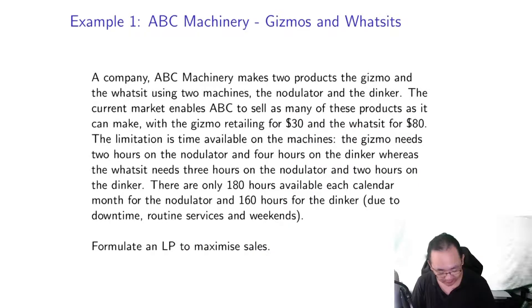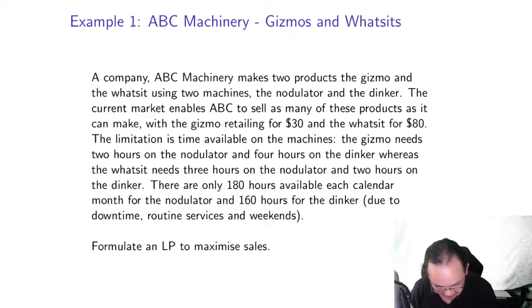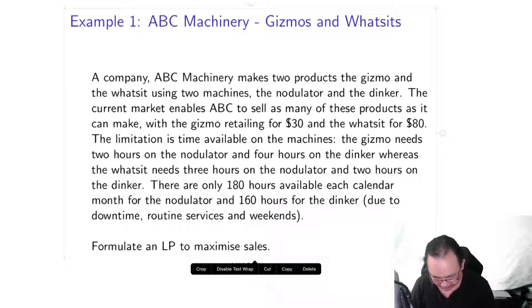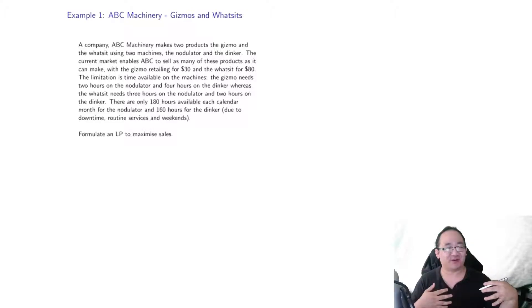We've got limitations on time available on the machines — the Nodulator and the Dinker — and that's definitely going to be one of our constraints. There are only 180 hours available each calendar month for the Nodulator and 160 hours for the Dinker. Coming up with an LP model can be difficult, and it's one of those things where you try to figure out your intuition through examples.